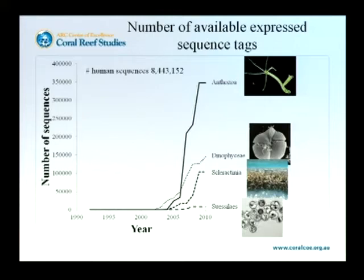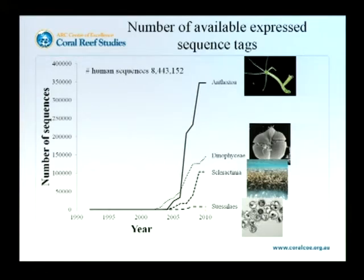Even now, after about five years of work, this group here — the order that symbiodinium belongs to — we now know somewhere in the order of about 8,000 to 9,000 genes. And we're really the poor cousins of the symbiosis if we look at what we know about scleractinian corals, where the number of genes is somewhere around 150,000. There will be a coral genome available soon, so this will obviously increase.